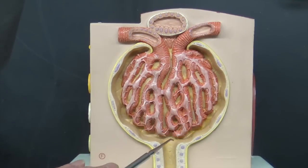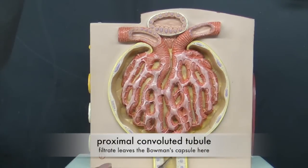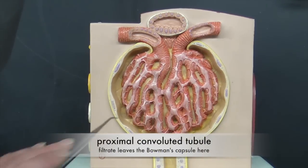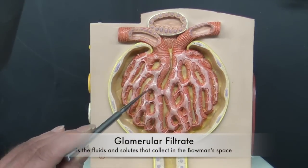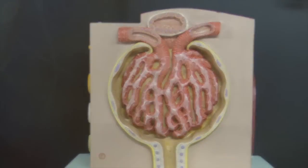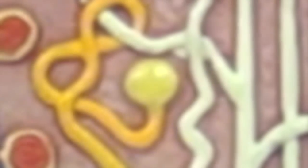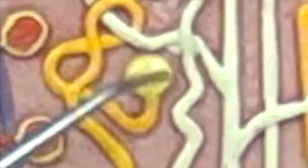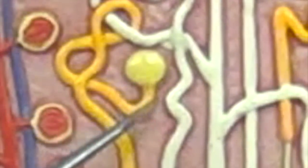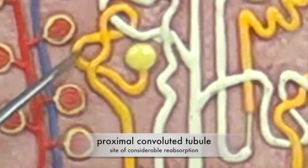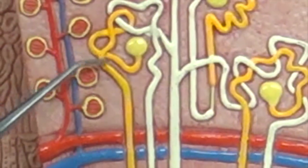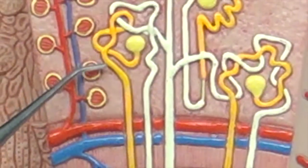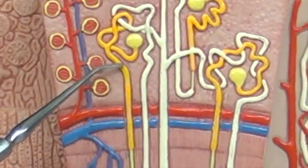This filtrate leaves by the proximal convoluted tubule. The filtrate created within the Bowman's capsule is essentially plasma without the proteins. In the proximal convoluted tubule, a lot of things are reabsorbed: all of the glucose, all of the amino acids, about 65% of the sodium, and consequently 65% of the water.